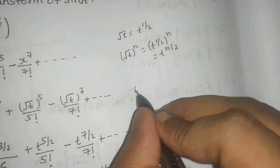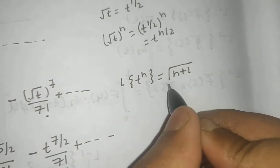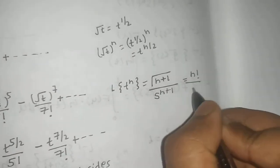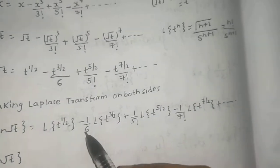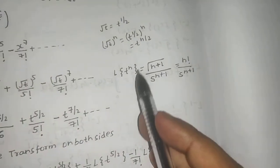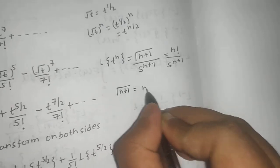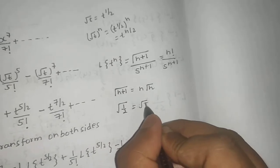We know that Laplace of t^n is Γ(n+1) / s^(n+1). Remember that n! / s^(n+1) is used only when n is an integer. Since n is a fraction here, we use the gamma notation. Key properties: Γ(n+1) = n·Γ(n), and Γ(1/2) = √π.